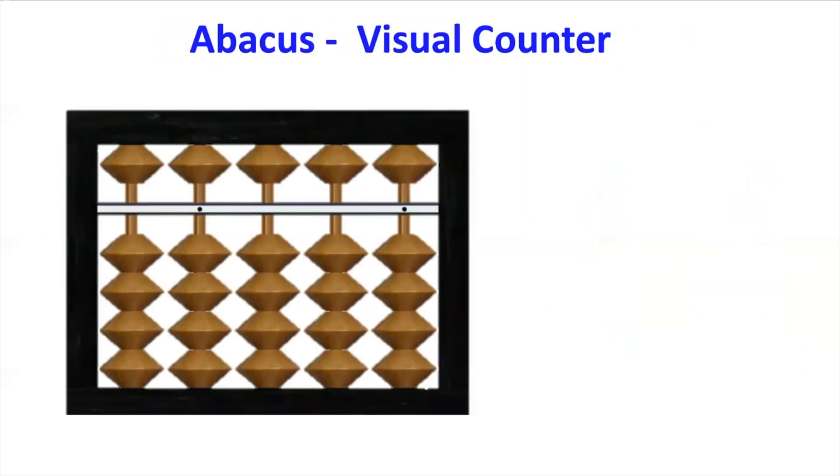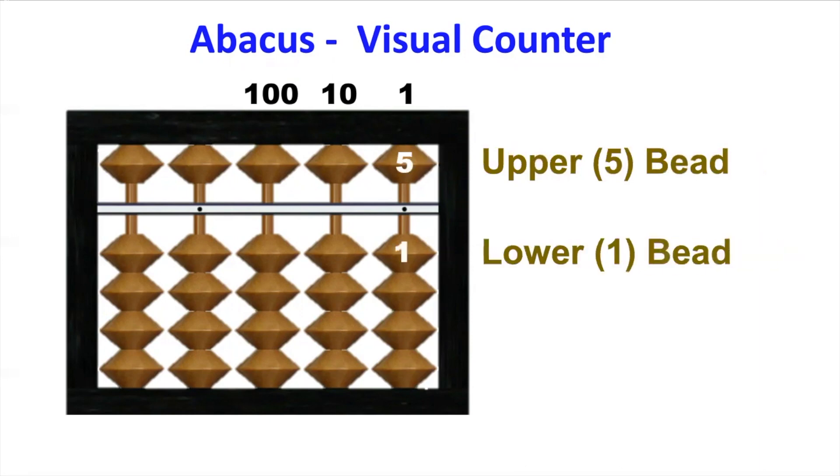Abacus visualizes numbers. The columns represent the digits. The first column from the right is the 1st digit. The second is the 10th digit. The third is the 100th digit, and so on. This arrangement conforms to our numeral system. There are five beads on a rod. Each upper bead represents a value of 5. Each lower bead represents a value of 1. The horizontal beam is a counting beam. Beads are counted when they touch the counting beam.